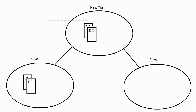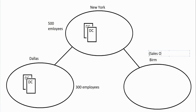Birmingham is a relatively new and very small office. Whereas New York has around 500 employees and Dallas around 300, Birmingham is just a small sales office where salespeople meet with customers — maybe only about 10 employees. There isn't even a full-time IT department or IT staff working in that Birmingham office.